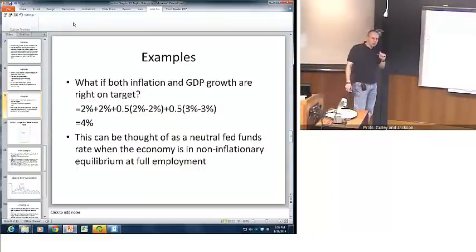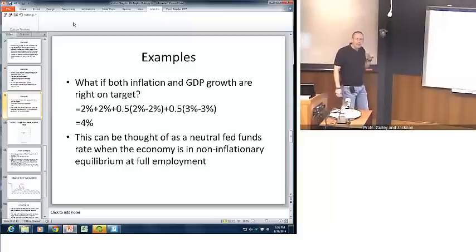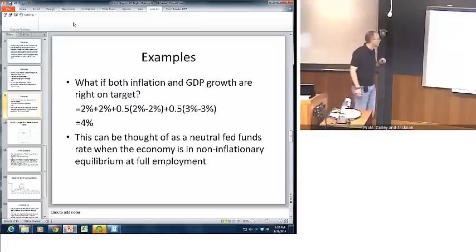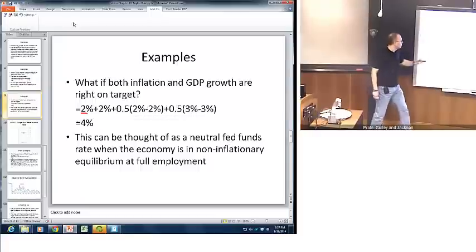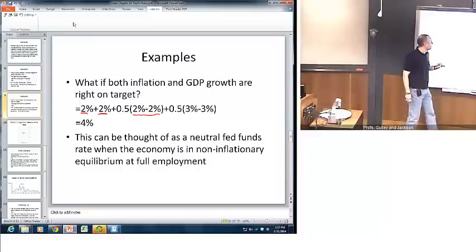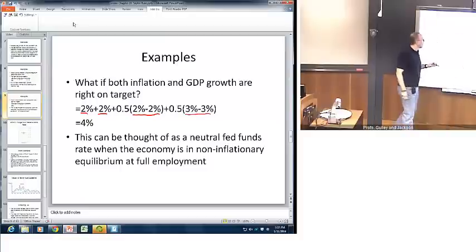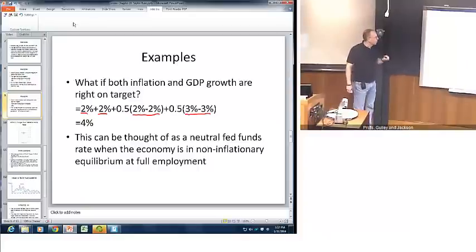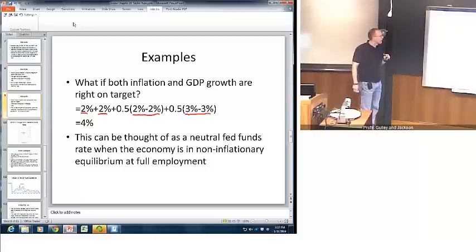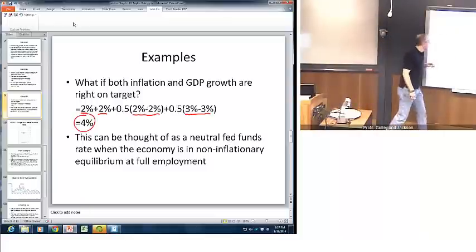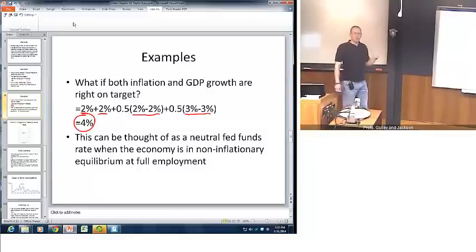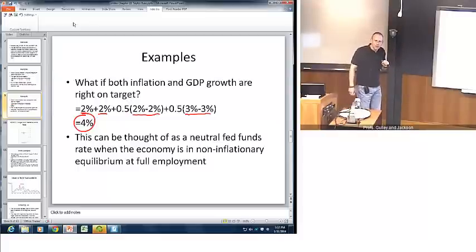Now suppose, what happens if both GDP growth and inflation are exactly on target? That would imply that the inflation rate is 2% and the GDP growth rate is 3%, based on my assumptions. We plug in the actual inflation rate, add it to the real federal funds rate, and we take half the difference between actual and target inflation, plus half the difference between actual and target real GDP. Now, since they're right on target, the values in parentheses reduce to zero, and the rest of that equation drops out. So we end up with a target federal funds rate of 4%. This can be thought of as a neutral federal funds rate that the Fed should be pursuing when the economy is exactly at the objectives that the Fed is interested in achieving.